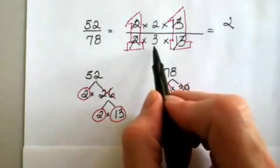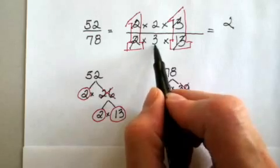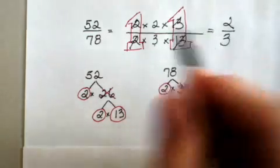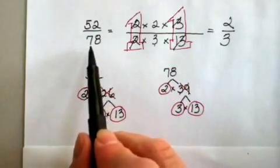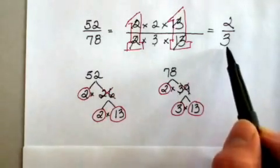1 times 3 is 3, 3 times 1 is 3, and 52 over 78 reduces to 2 thirds.